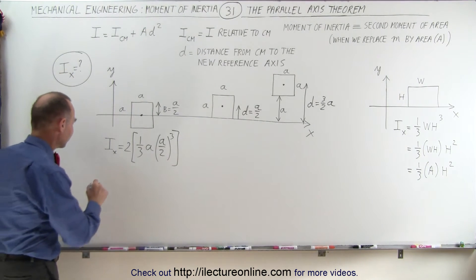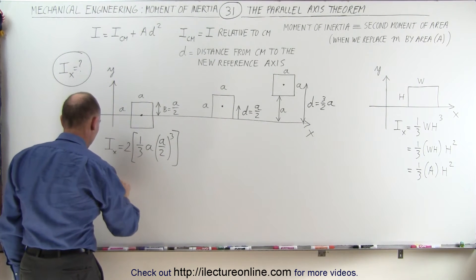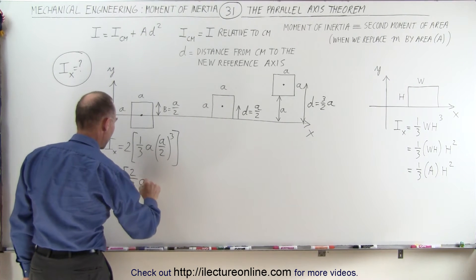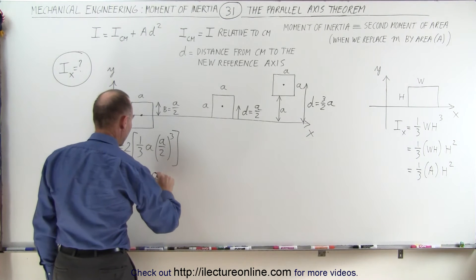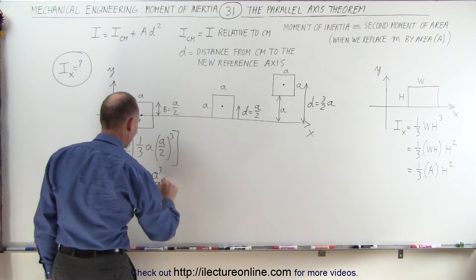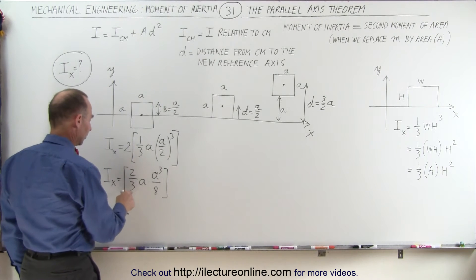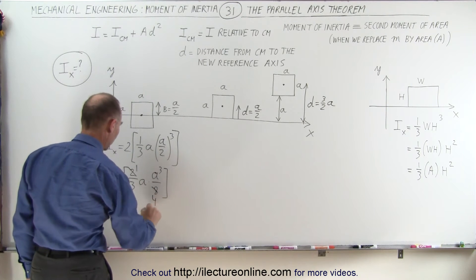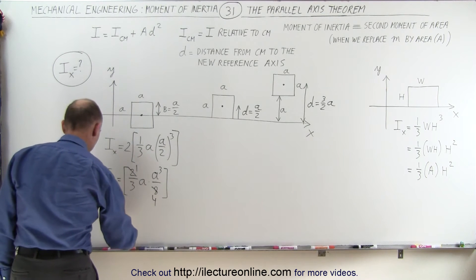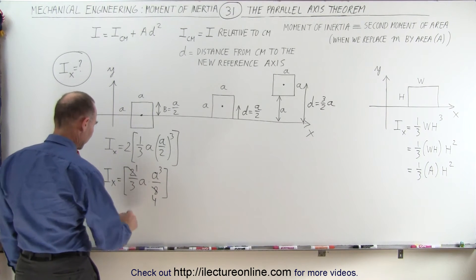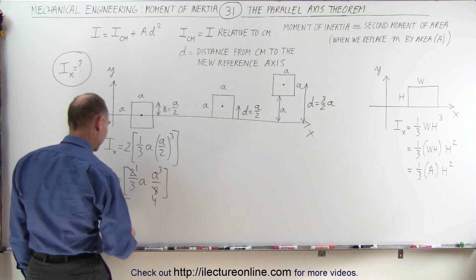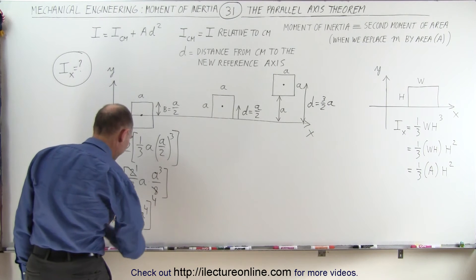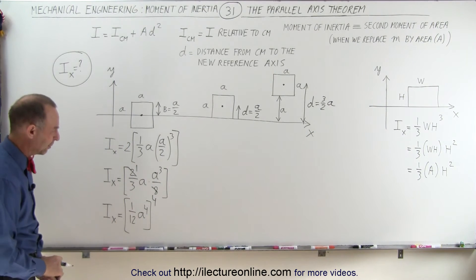So, I sub x is equal to 2/3 times a times a³/8, because 2³ is 8. The 2 and 8 simplify to give a denominator of 4, and so therefore, the moment of inertia relative to the x-axis is going to be 1/12 a to the fourth power. And that's, of course, what we'd expect it to be.